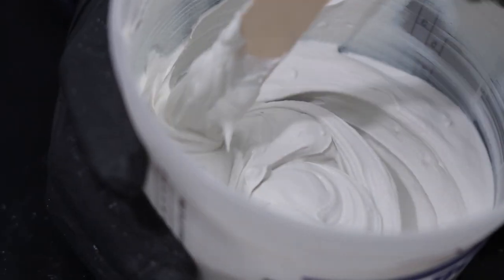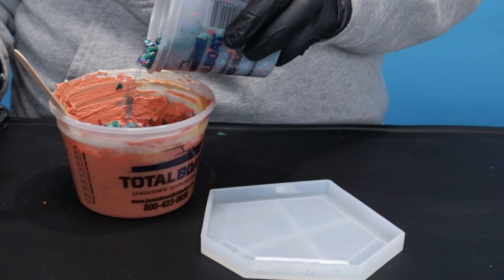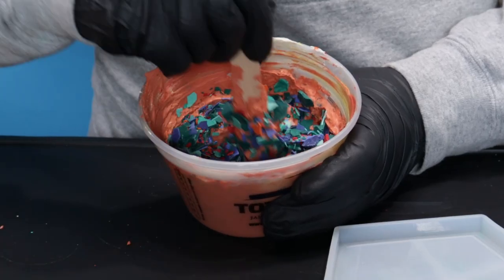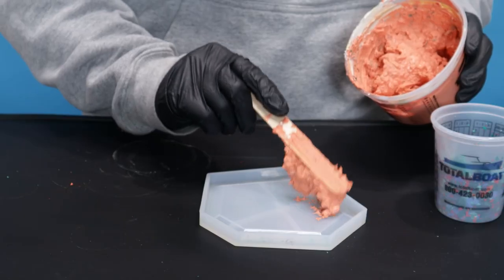Mix up the Razzo that you want to use as your base. Add chips in various colors and sizes and pour into your mold.